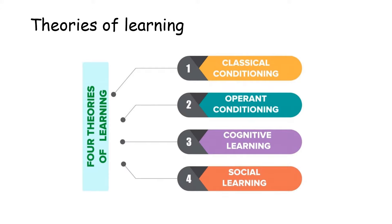In theories of learning in organizational behavior, we need to understand four important theories of learning. They are classical conditioning theory, operant conditioning theory, cognitive learning theory, and social learning theory.